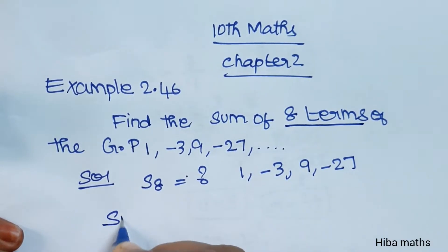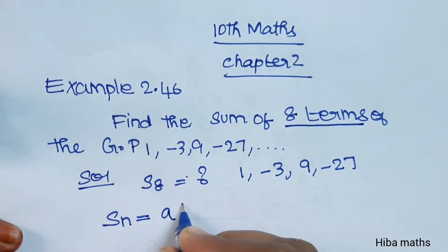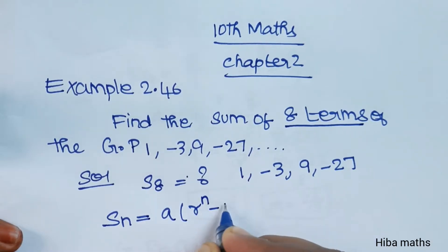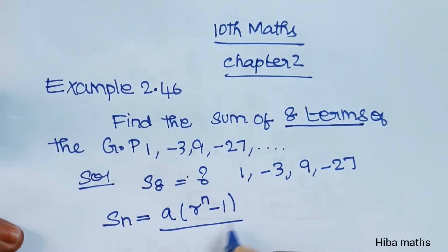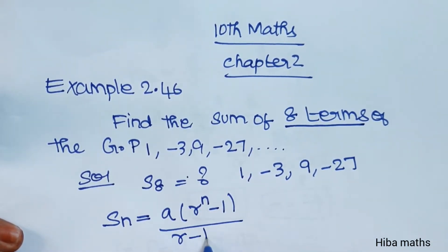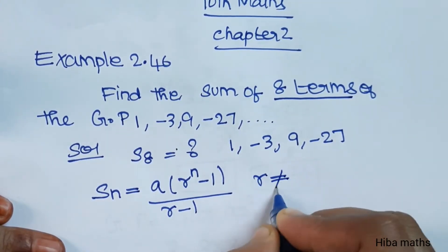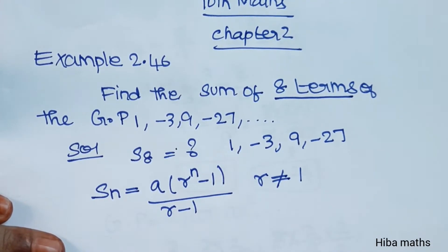The formula for S(n) is: a multiplied by (r^n - 1) divided by (r - 1), where r should not be equal to 1.